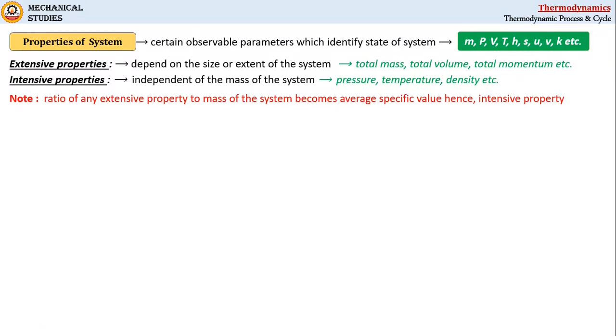For example, specific volume is an intensive property which is the ratio of total volume to the mass of the system. Another example is specific enthalpy, which is also an intensive property and is the ratio of total enthalpy to the mass of the system.